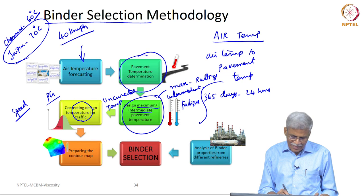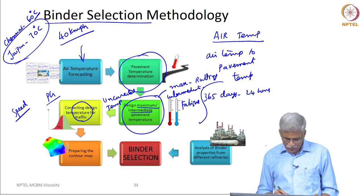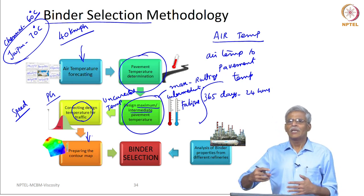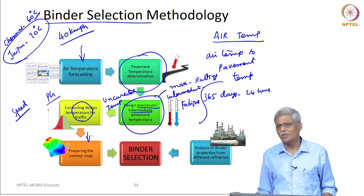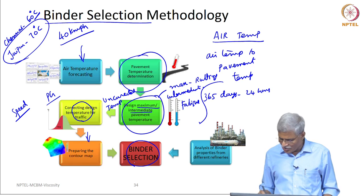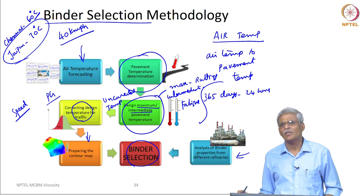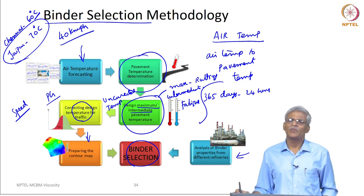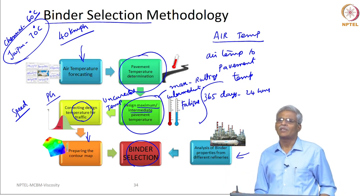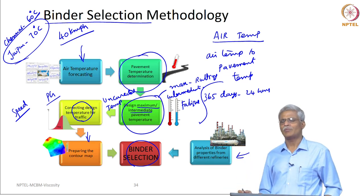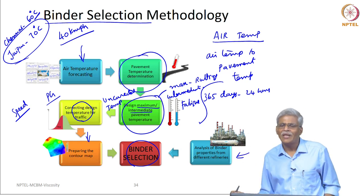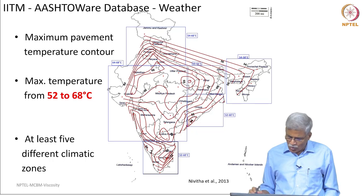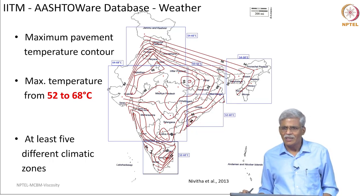We will discuss this in more detail in the PG testing section. Then what we did next was we prepared a contour map, because we are not expecting an Indian highway engineer to collect air temperature data, compute pavement temperature, and then correct for traffic. From the contour map, the binder selection will be done. We also need to do analysis of binders from different refineries. The situation in India is slightly different — we choose a binder based on the geographical proximity of the nearby refinery, not necessarily which refinery makes the best bitumen or uses a specific process.